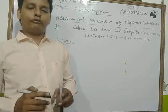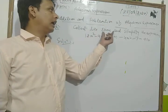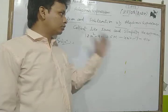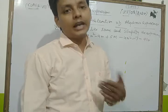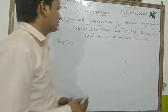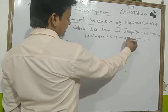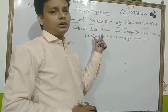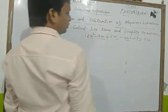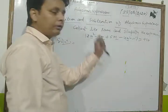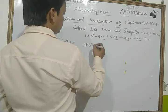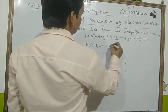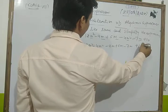In this question, first of all we collect the like terms and simplify the expression. Like terms are those in which the degree of the variable is the same. Here, m² and m² are like terms because the variable has the same power. Similarly, m, m, and m are also like terms. So first we collect them: 12m² and minus 4m² together, then minus 9m, plus 5m, and minus 7m together, and plus 10.